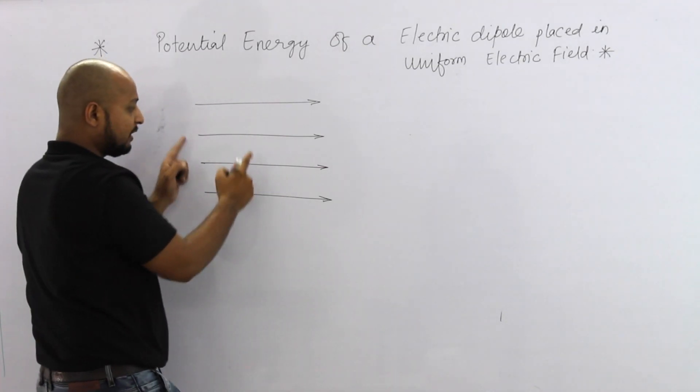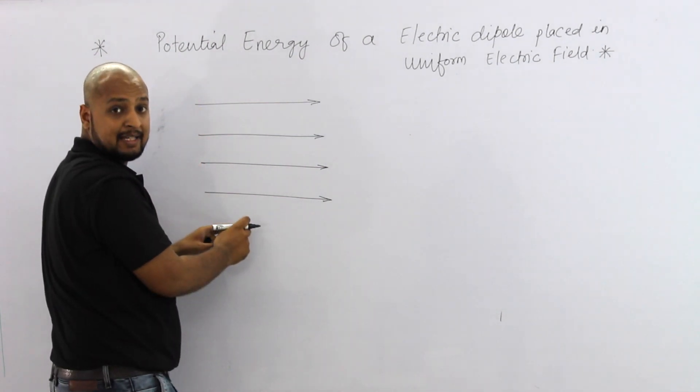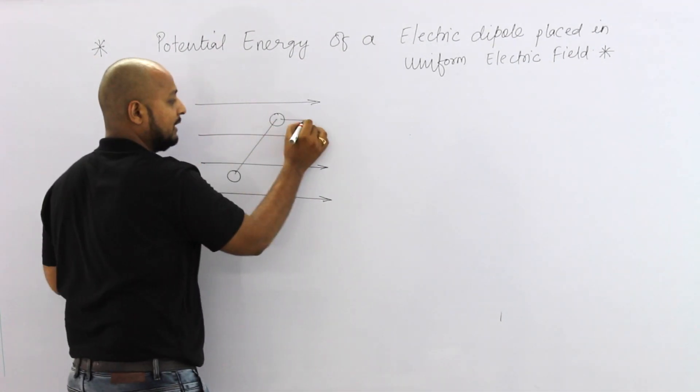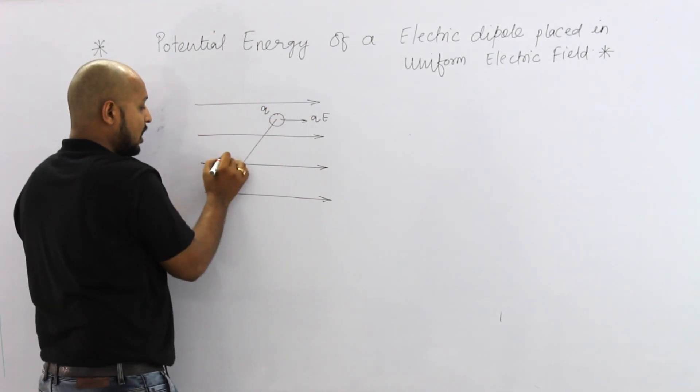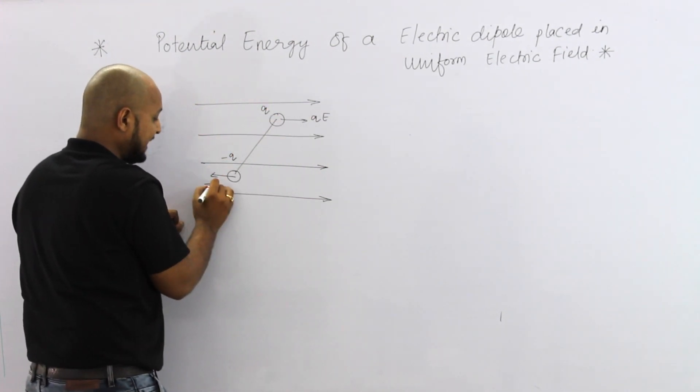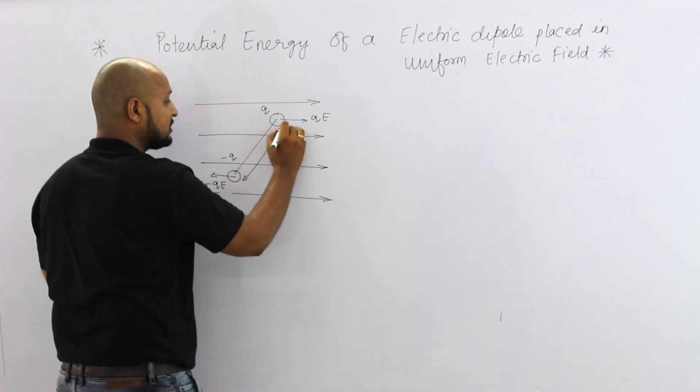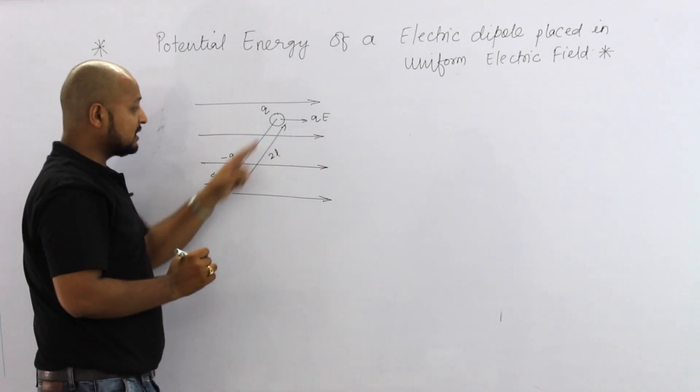Uniform electric field is shown by equidistant parallel lines. A dipole is placed. The force on plus Q is QE, on minus Q it is minus QE, and the distance between the two charges is 2L.